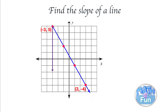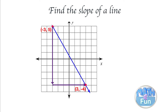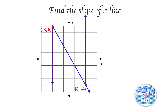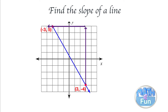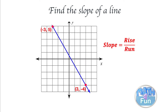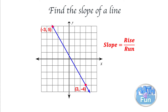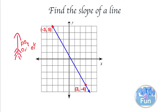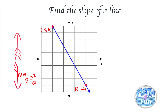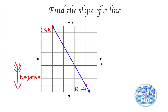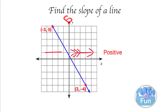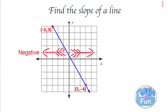You have to go straight downward and then to the right, or from the lower point to the upper point upward and then to the left, using the rule rise over run. Remember: if you go up, count as positive; if you go down, count as negative; if you go to the right, count as positive; if you go left, count as negative.